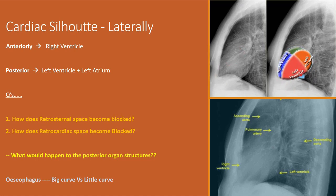Now I want to ask some questions. We need to identify the surrounding structures and the mediastinum. Here we can see the retrosternal space — this is your sternum, and this space is behind it. Here we see the retrocardiac space — retro meaning behind, cardiac meaning heart. We can just about see the ascending and descending aorta, and in front of this aorta we would see the esophagus.